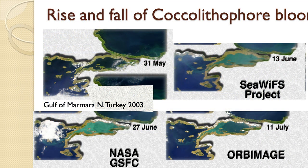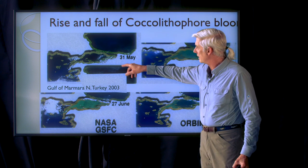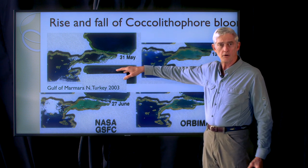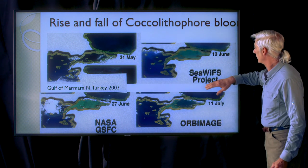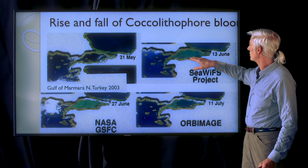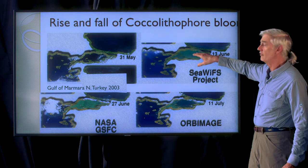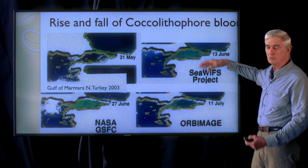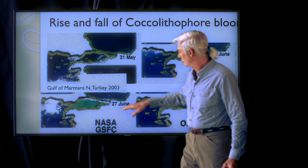We can track coccolithophore blooms over time. This is a different bloom in a different place. It started in late May off the northern coast of Turkey. About two weeks later, in mid-June, you can begin to see this entire body of water filling up with this chalky bloom of coccolithophores.